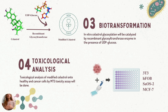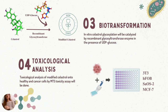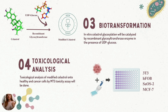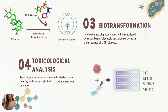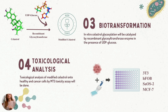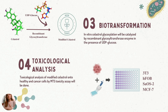To determine the toxicity of modified Celastrol, we will perform an MTT assay with both healthy cell lines, which are mouse embryonic fibroblasts and human fetal osteoblastic cells, and cancer cell lines, which are human osteosarcoma and human breast cancer cells. The reduced toxicity will be confirmed with the DPPH free radical scavenging activity test.